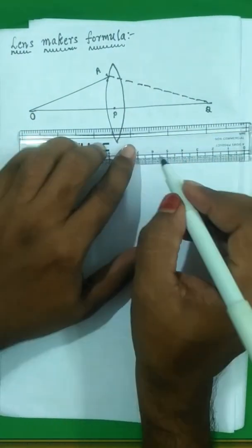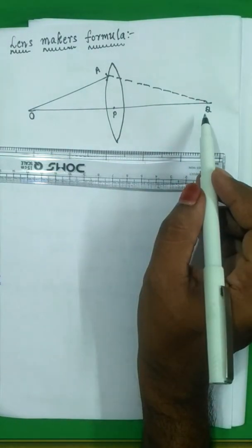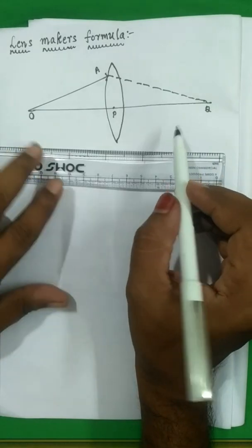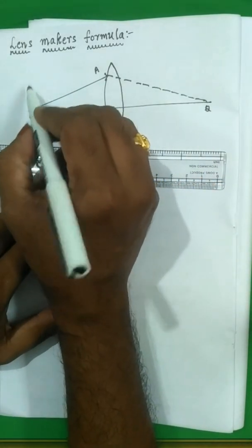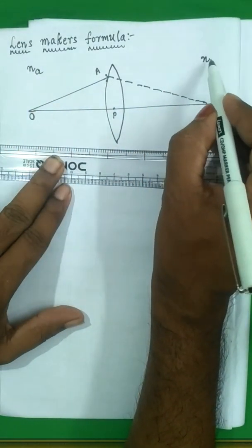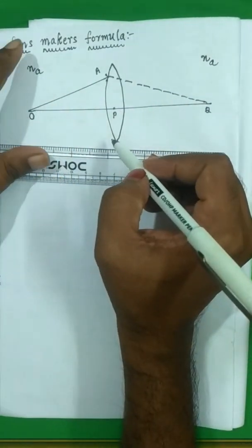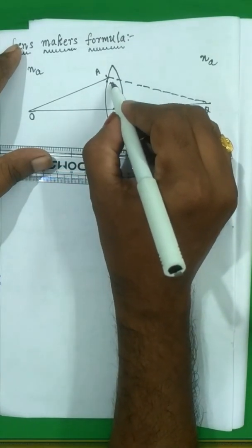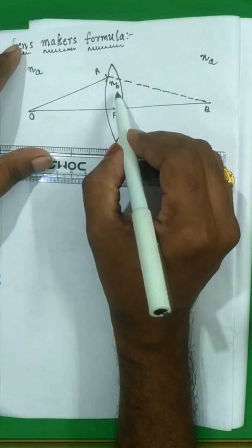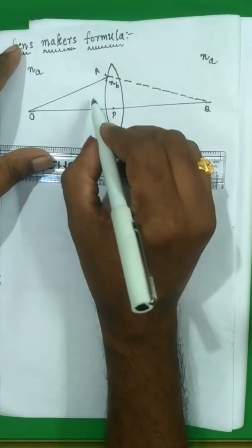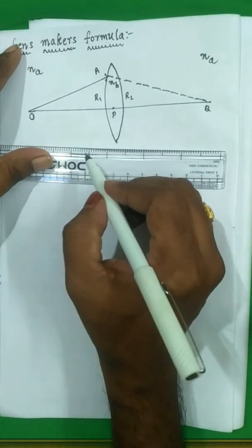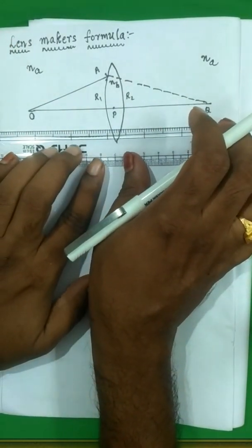At Q we can observe the image. The surrounding medium has refractive index na, and the refractive index of the lens material is nb. The radii of curvature of the two surfaces are r1 and r2.